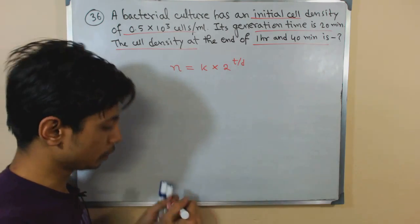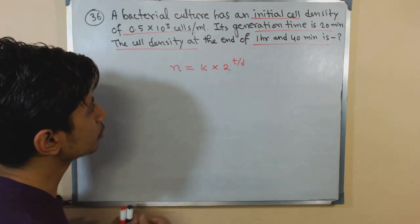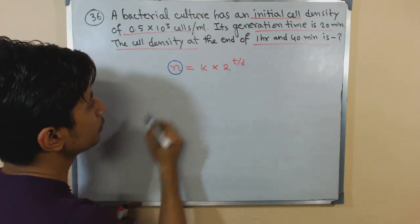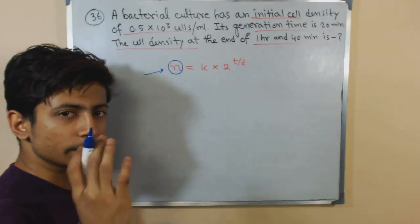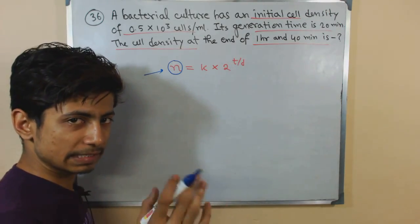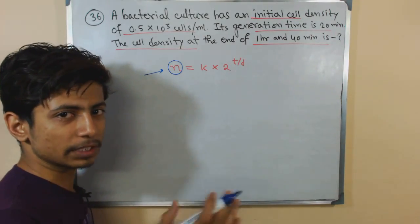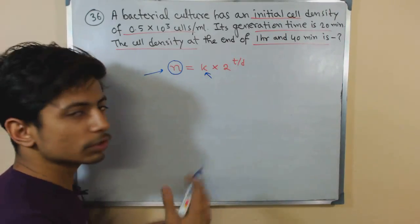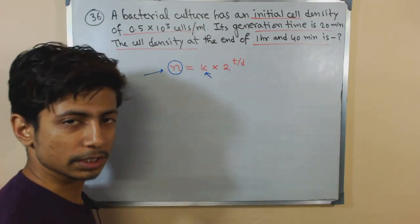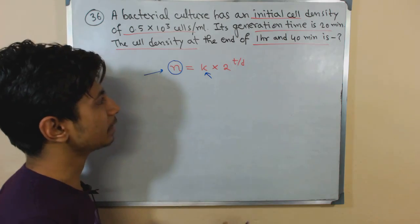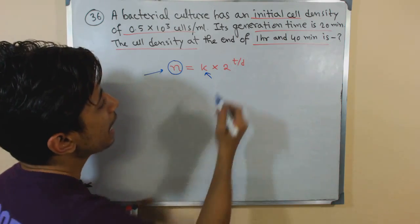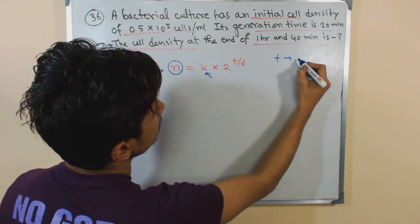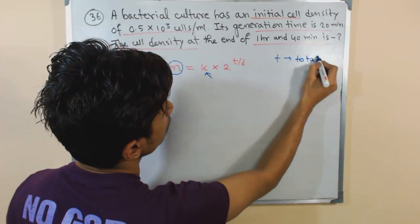What we need to calculate is this particular value n, because that means the number of bacterial cells at the end of a particular time. On the other hand, K is also the number of bacterial population, the density of the cells at the beginning of the particular time.